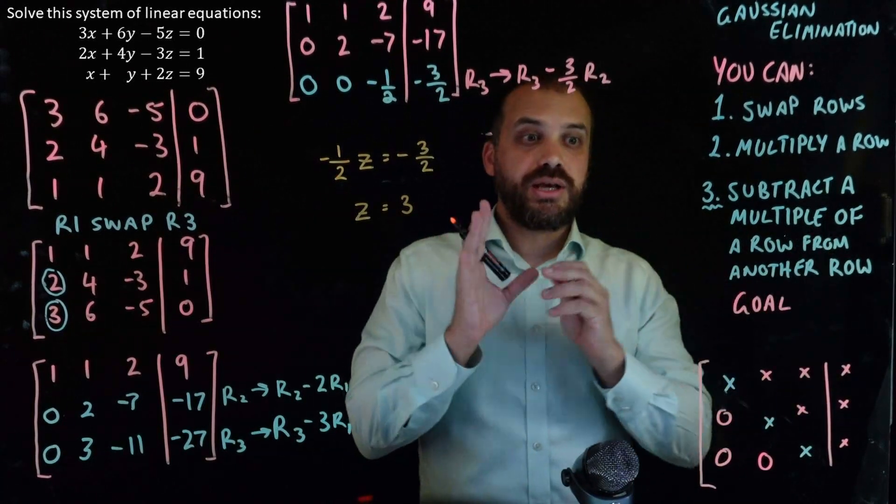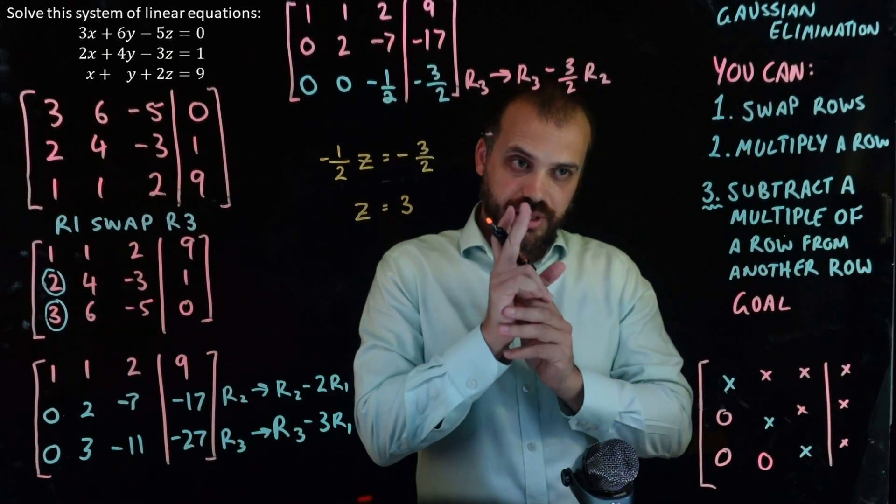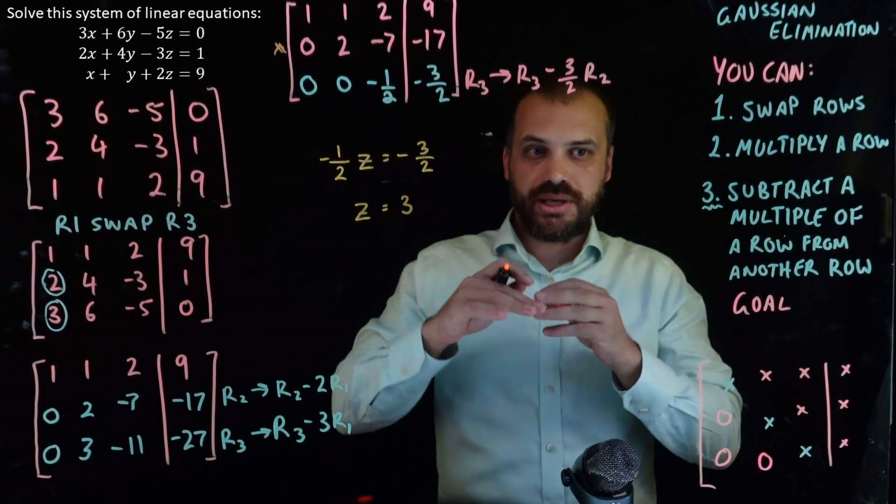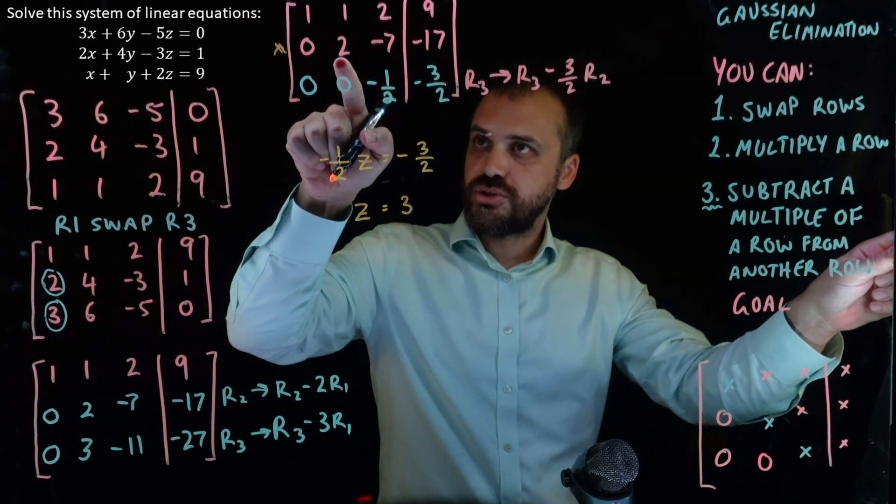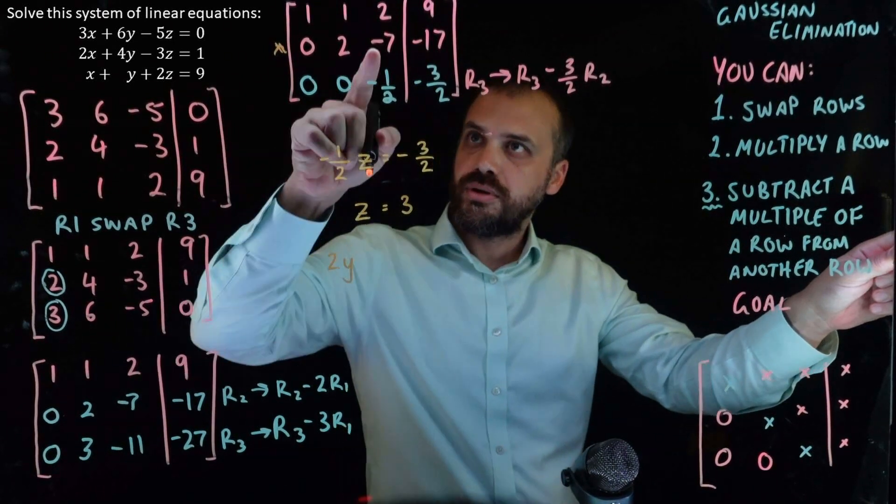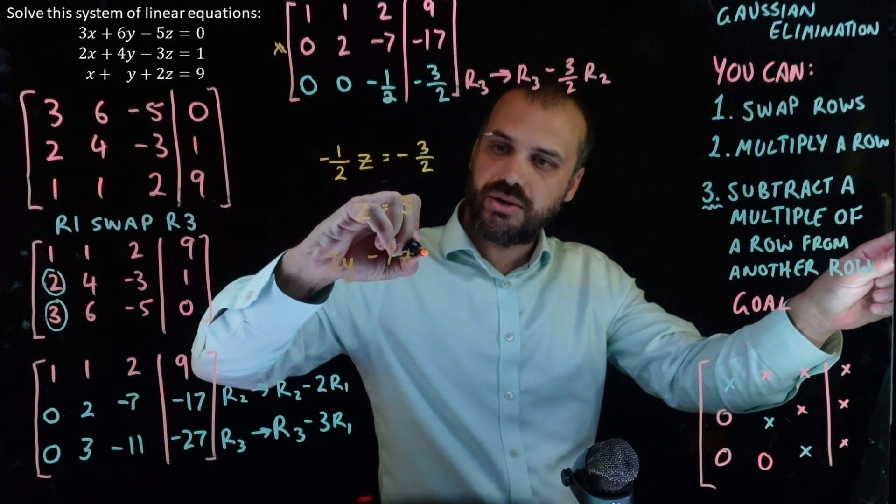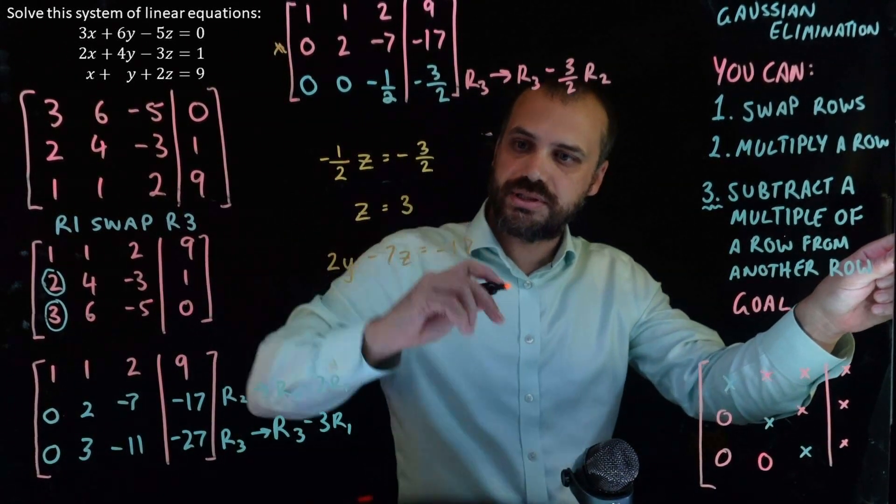Alright, so solving that, we know now that z equals 3. Now, this line here can be rewritten as 2y minus 7z equals negative 17.